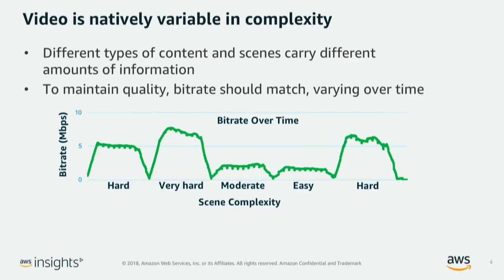This graph is a basic representation of that. Imagine we're talking about a few minutes of video — maybe two or three minutes — with five scenes sorted by fundamental complexity: hard, very hard, moderate, and easy. The very hard content might be a panning shot of a crowd, or there could be explosions, confetti, or things that create a lot of dynamic motion. It requires a lot of bits to accurately convert all of that dynamic motion and activity into a code stream that can be recovered by a decoder and recreated faithfully.